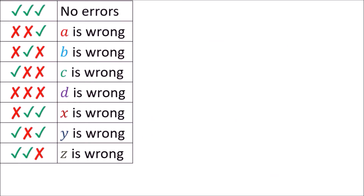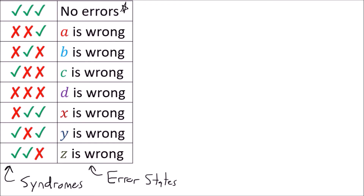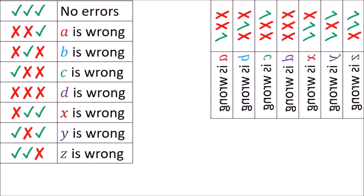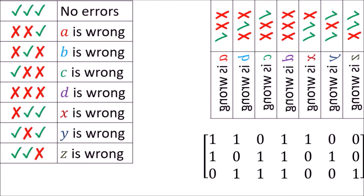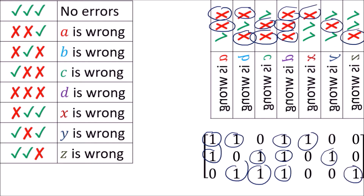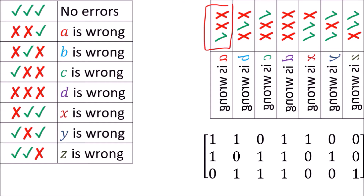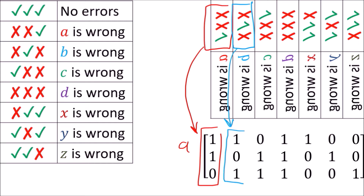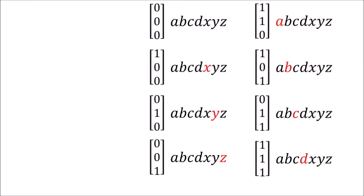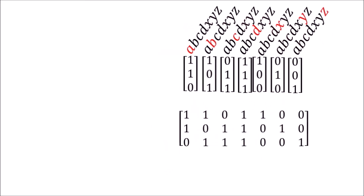You might recall from a previous video that I introduced a table of the checkbit states, or syndromes, for the XYZ bits, and the corresponding error states for the syndromes. The reason the Hamming 7-4 code can only correct one error per codeword is because it only has enough states for each of the seven bits plus one extra state for the no-error case. If we flip this table around and remove the no-error state, the X's in the checkbit states line up perfectly with the 1s in the parity check matrix. Each column in the parity check matrix corresponds to a given error state, so we can take the syndrome vectors for each error state and line them up in order to get the parity check matrix.